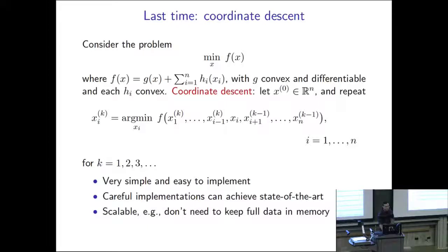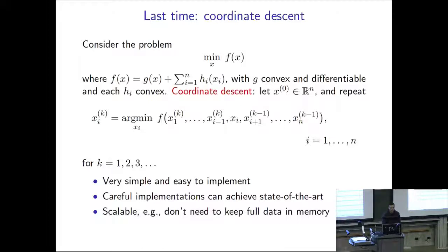So this is what we learned last time: we learned about coordinate descent, which applies to problems of this form. So f is g plus the sum of h_i, where g is convex and differentiable, and each h_i is convex. We call such a function h that decomposes into the sum of h_i(x_i) a separable function. These x_i's could be individual coordinates or coordinate blocks — we're kind of leaving it ambiguous. These blocks don't have to be of equal dimensions; this could be just an arbitrary partition of the coordinates of x.